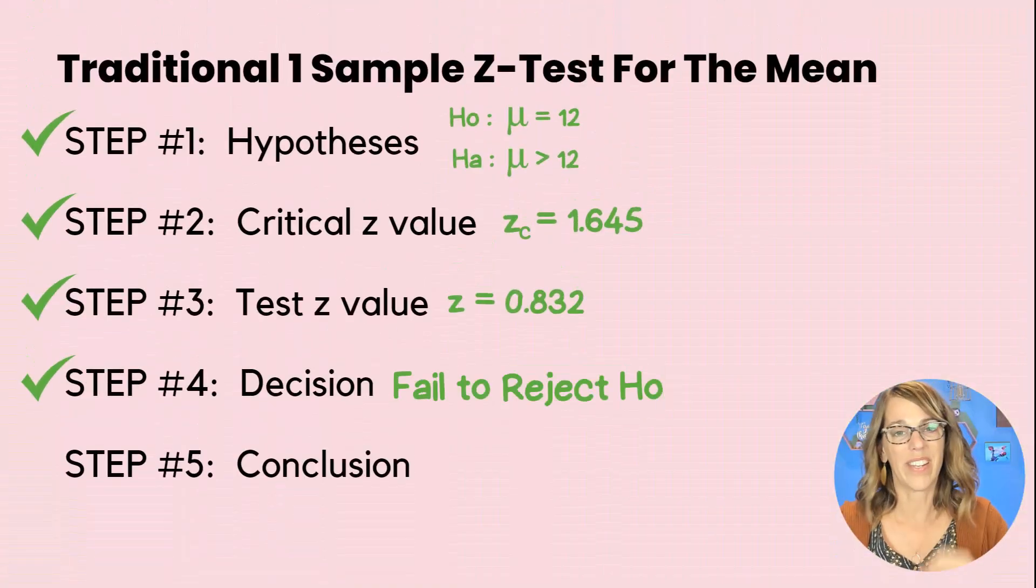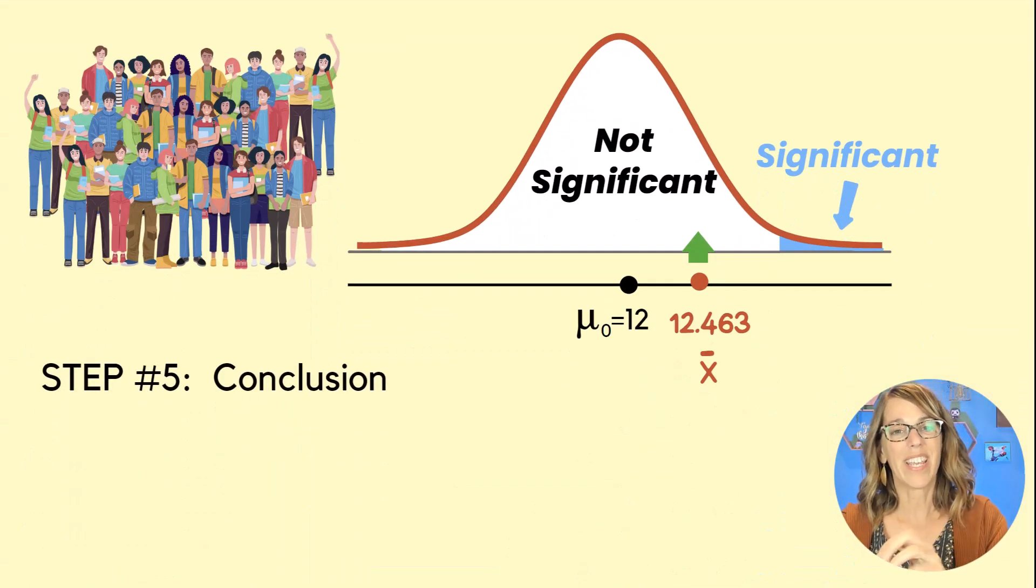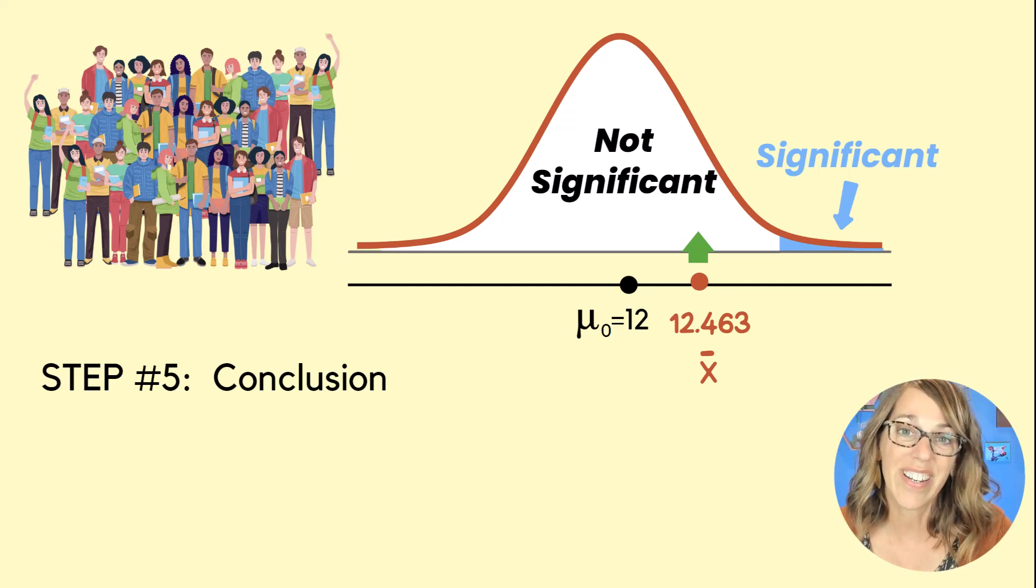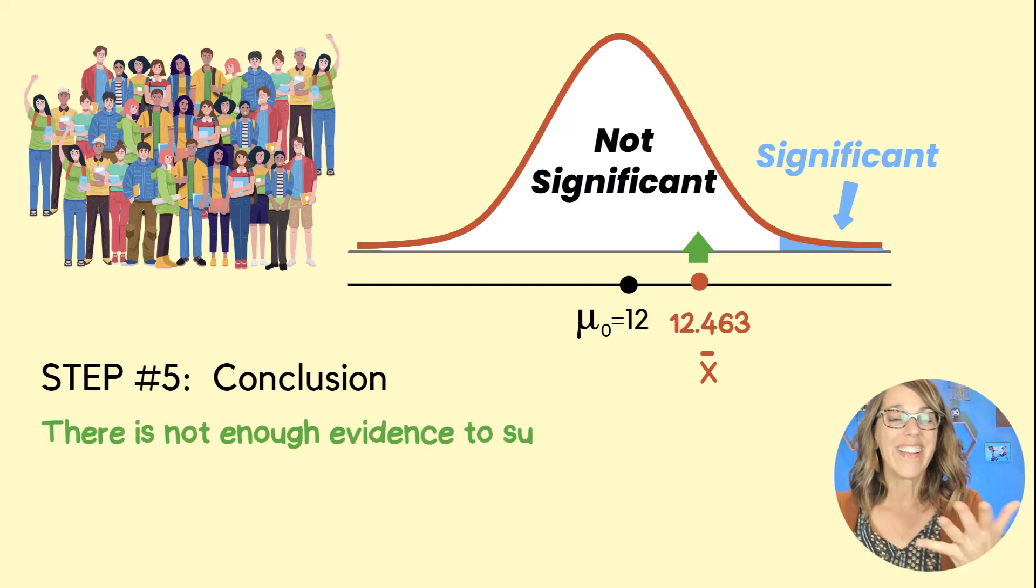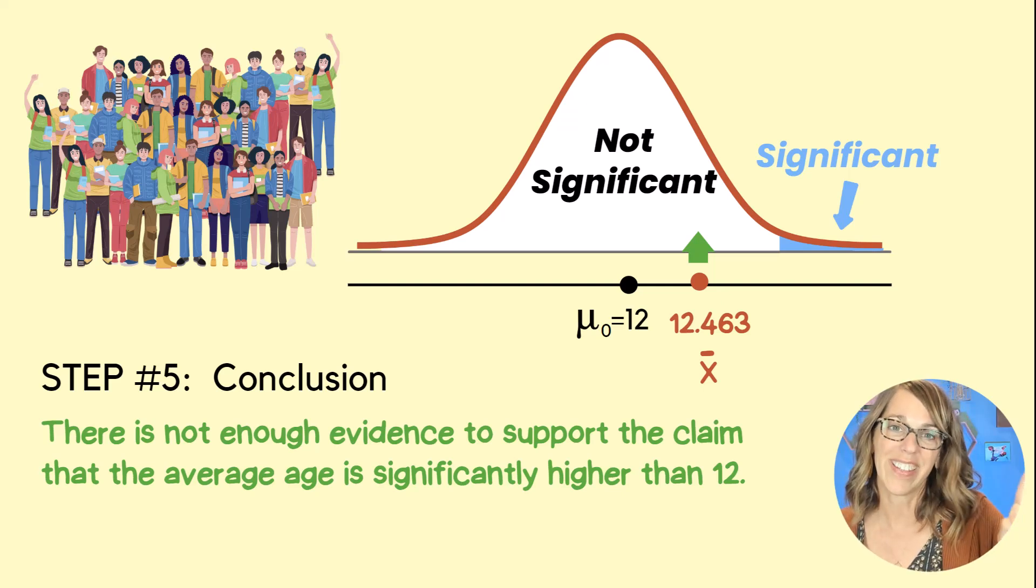So now that we've got that decision of fail to reject, we need that conclusion next. So back to thinking of these as not significant or significant. Our conclusion goes like this: There is not enough evidence to support the claim that the mean is significantly higher than 12. I hope this was helpful so much more that your TI-84 can do. Check this out next.